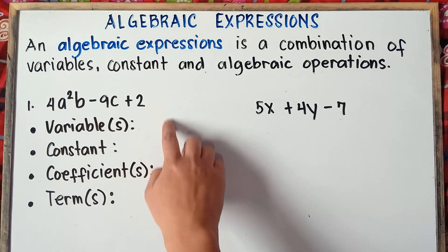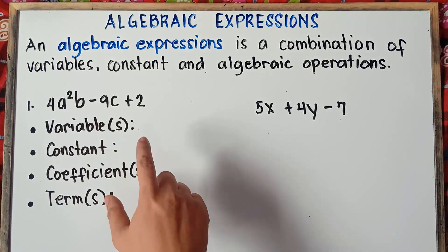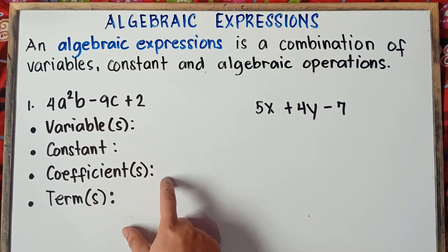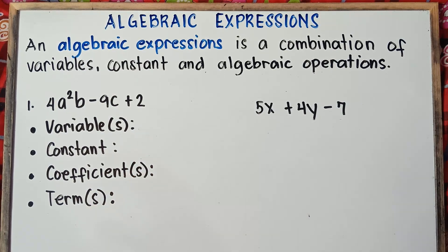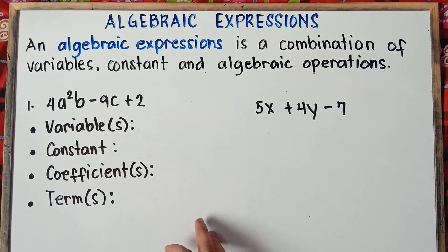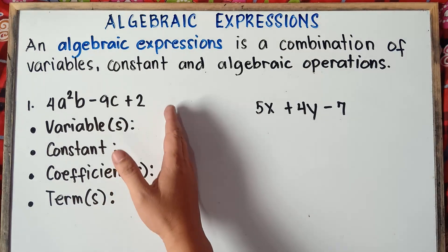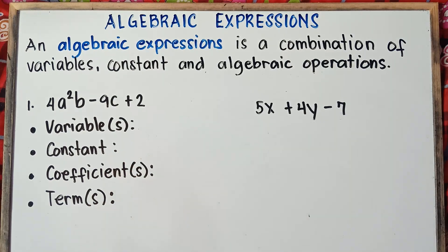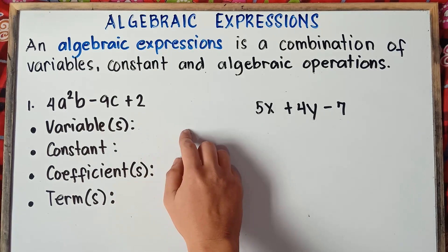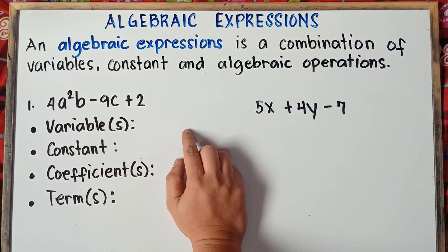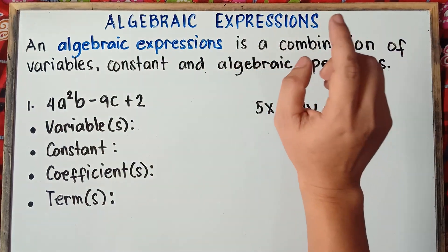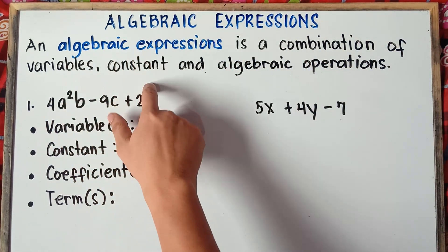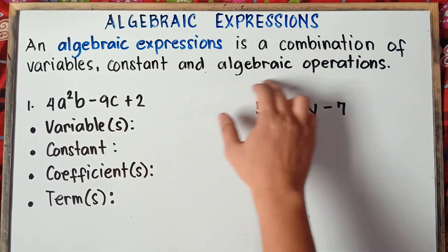Now before we answer this example class, you're told to find the variables, the constant, the coefficients, and the terms. We need to understand more what is an algebraic expression. So let's define it. An algebraic expression is a combination of variables, constant, and algebraic operations.